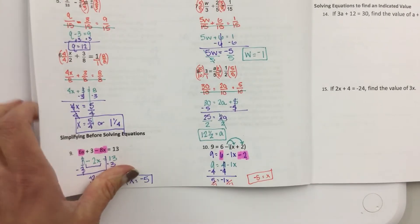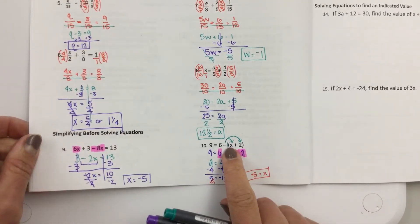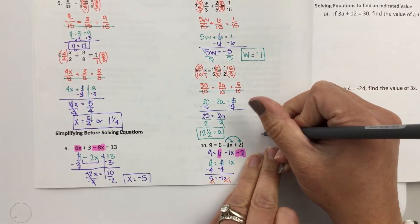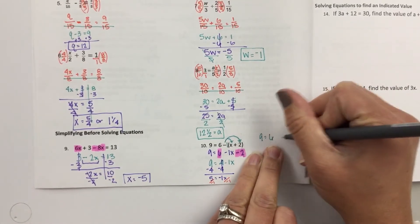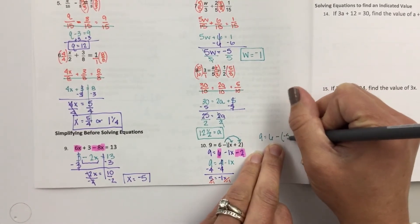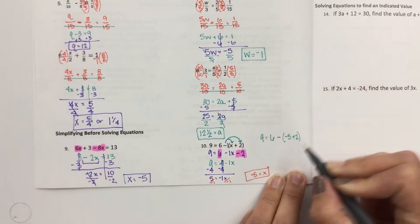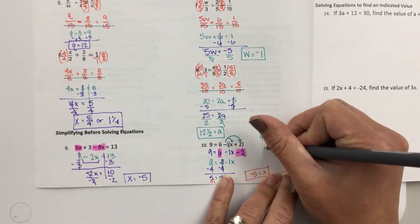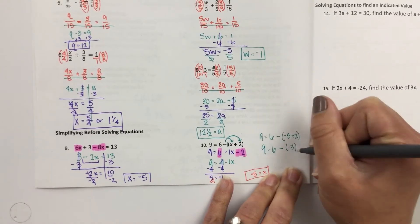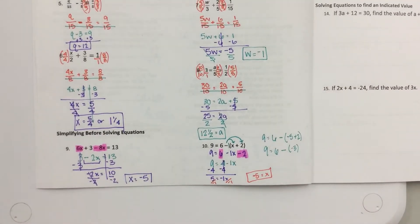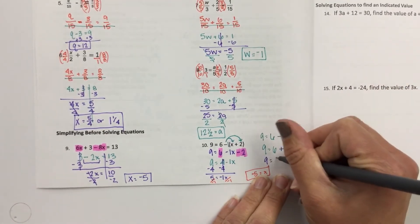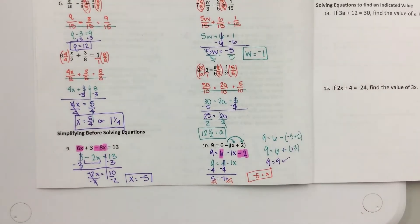And again, if you want to check this, you can put it in, and it should come out correct. So I'll just show you on this one. I've got 9 equals 6 minus negative 5 plus 2. Well, what is negative 5 plus 2? Negative 3. 9 equals 6 minus negative 3. Well, what happens when you subtract a negative? We add the opposite. 9 equals 9. So we did it right. That's a good sign.